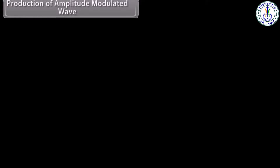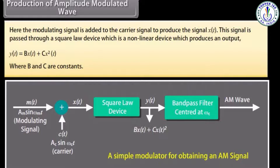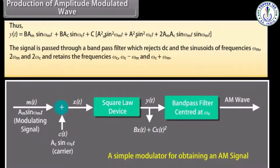Production of amplitude modulated wave: the modulating signal is added to the carrier signal to produce the signal x(t). This signal is passed through a square law device, which is a non-linear device that produces an output given by y(t) = Bx(t) + Cx²(t), where B and C are constants. The signal is then passed through a band pass filter which rejects DC and the sinusoids of frequencies ωm, 2ωm, and 2ωc, and retains the frequencies ωc, ωc − ωm, and ωc + ωm.